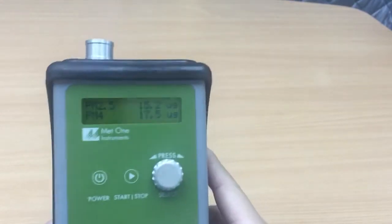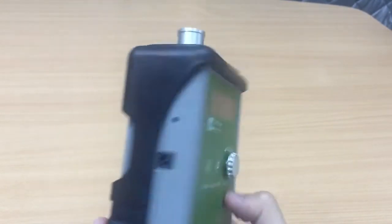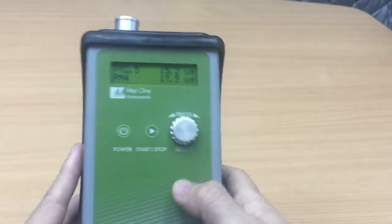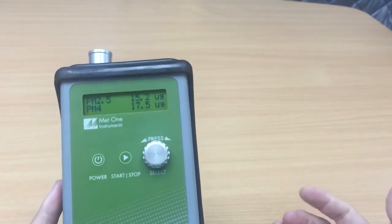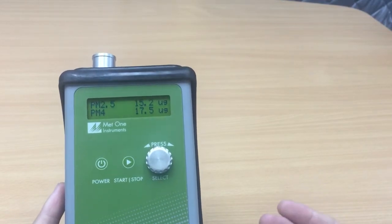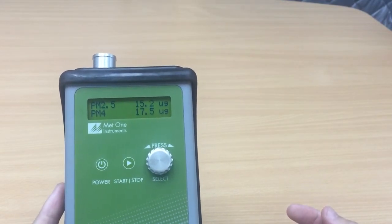What are the other functions? So in a nutshell, that's how we use the instrument. We charge it, we turn it on, we start the sampling and then one minute later we have an indication of how dusty or how clean a particular room is.